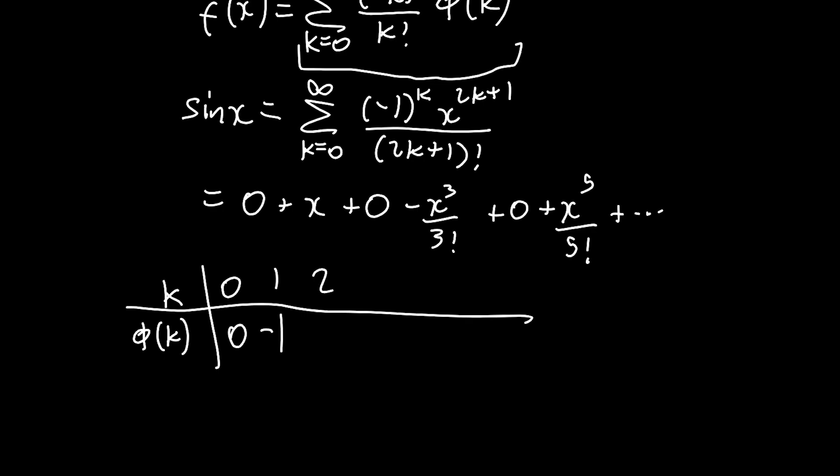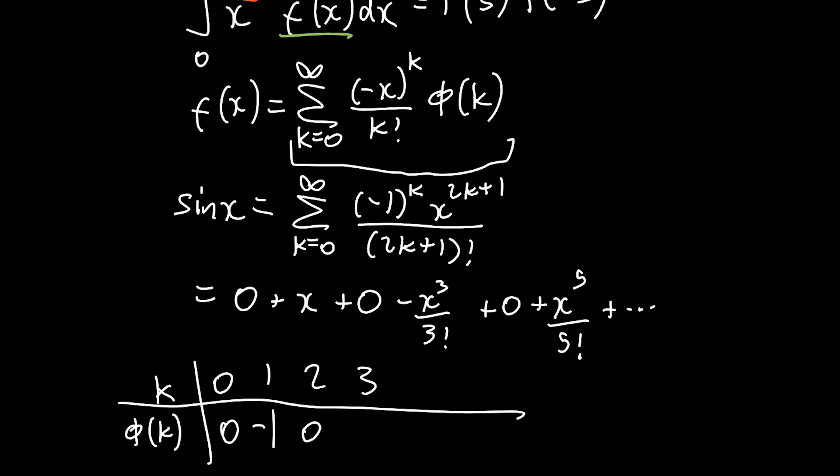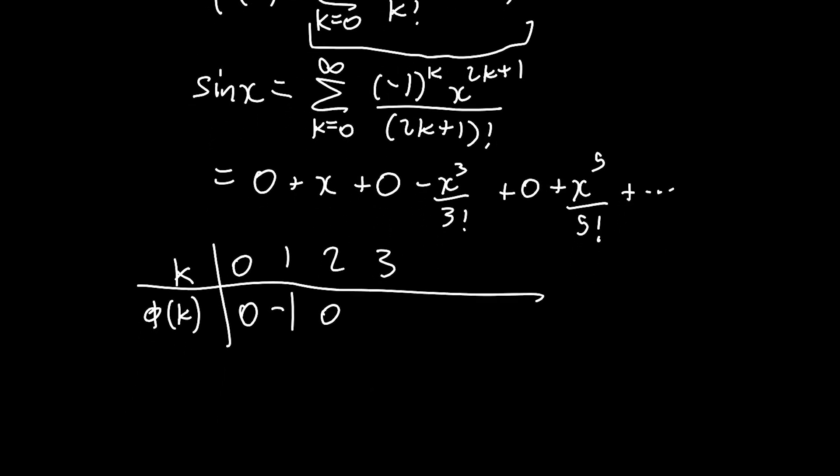Now when k equals 2, we have the same thing. It's an even term, so we want that to be 0. And now when k equals 3, in our Taylor series, we want minus 1 over 3 factorial as our coefficient. And we can see up in the f of x definition, we already have 3 factorial on the bottom for when k equals 3. So really, what we want is just for phi of k to be 1. And you'd know that this pattern is just going to repeat for k equals 4, 5, etc.